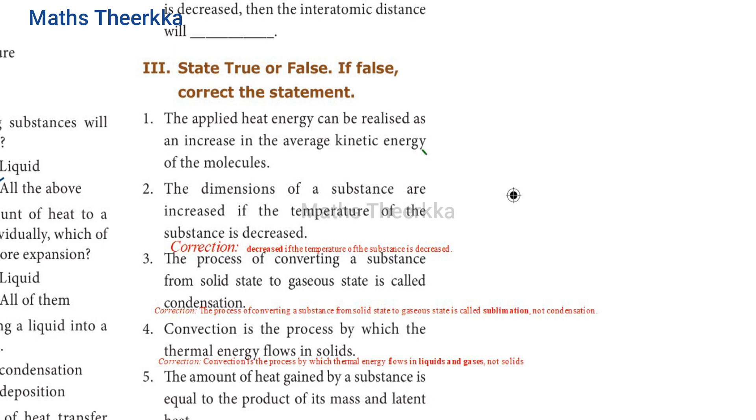Third one. State true or false. First one. The applied heat energy can be realized as an increase in the average kinetic energy of the molecules. The answer is true. Second one. The dimensions of a substance are increased if the temperature of the substance is decreased.